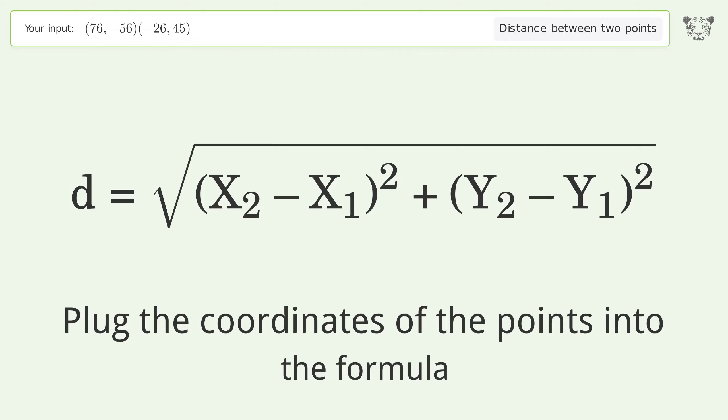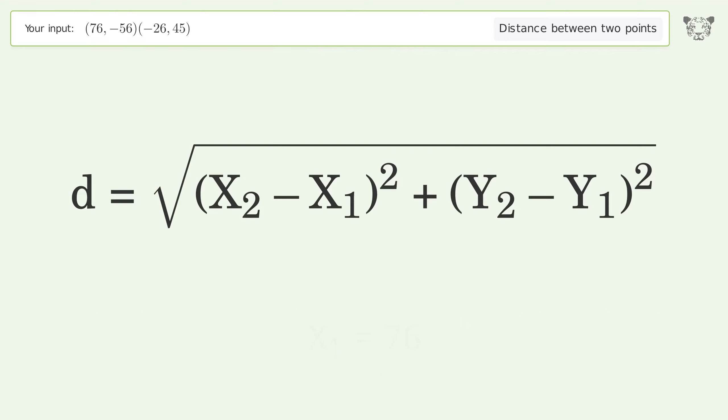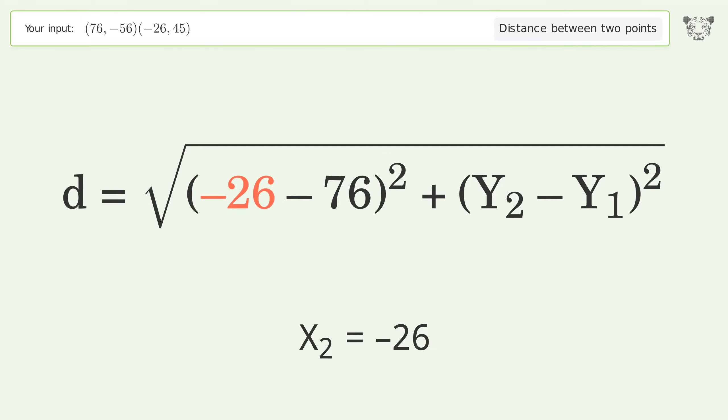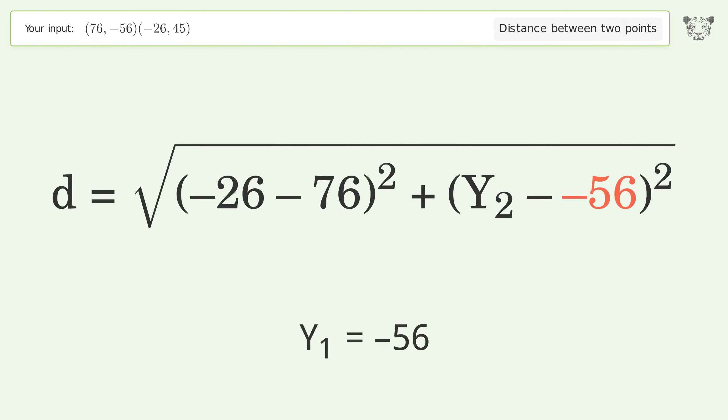Plug the coordinates of the points into the formula: x1 = 76, x2 = -26, y1 = -56, y2 = 45.